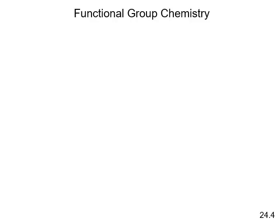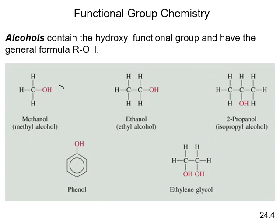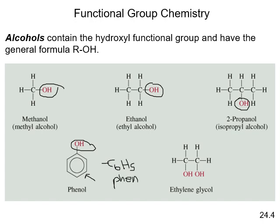Alcohols are structures that have an OH group on them. A special case is phenol — when a benzene ring carries an OH group in this specific arrangement, it's called phenol. 'Ol' at the end of a name means alcohol: methanol is one carbon, ethanol is two carbons, and 2-propanol means the alcohol is on carbon number two of a three-carbon chain.